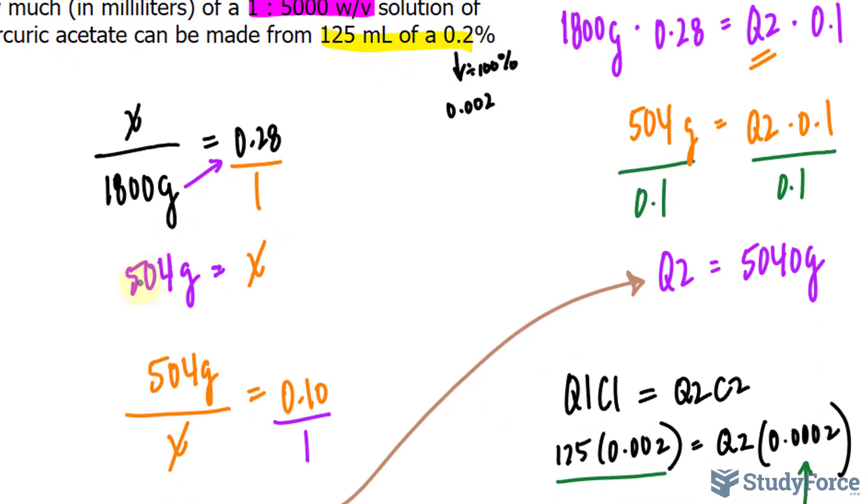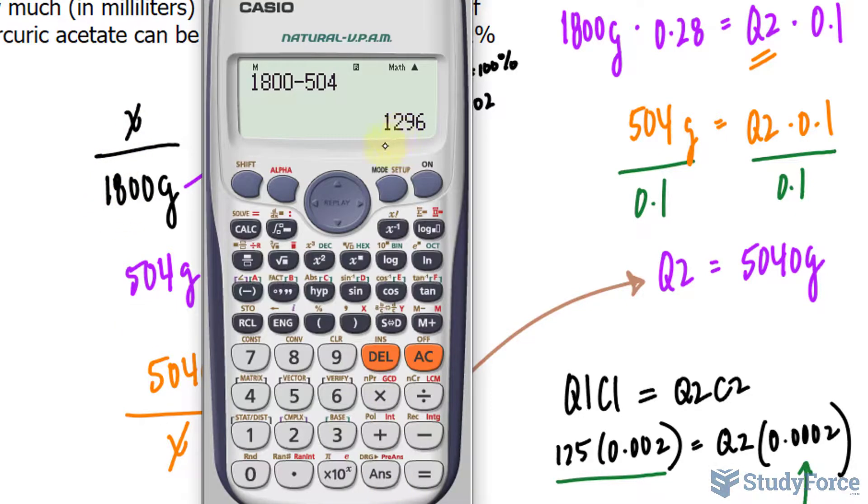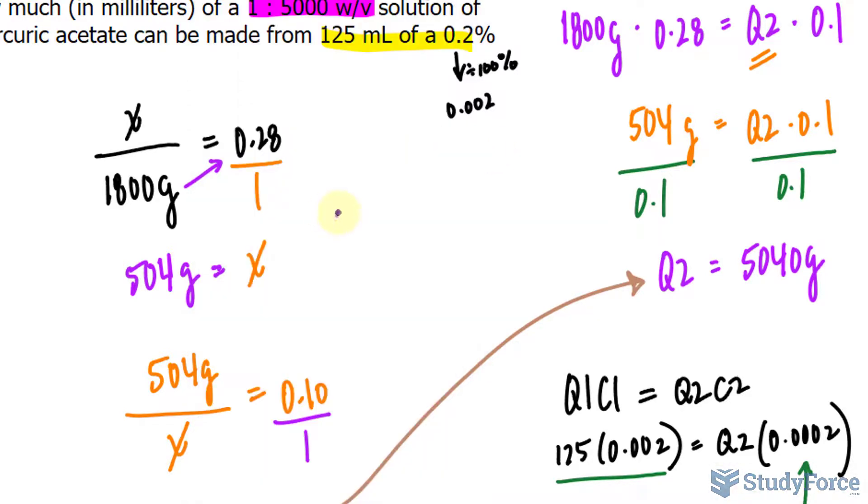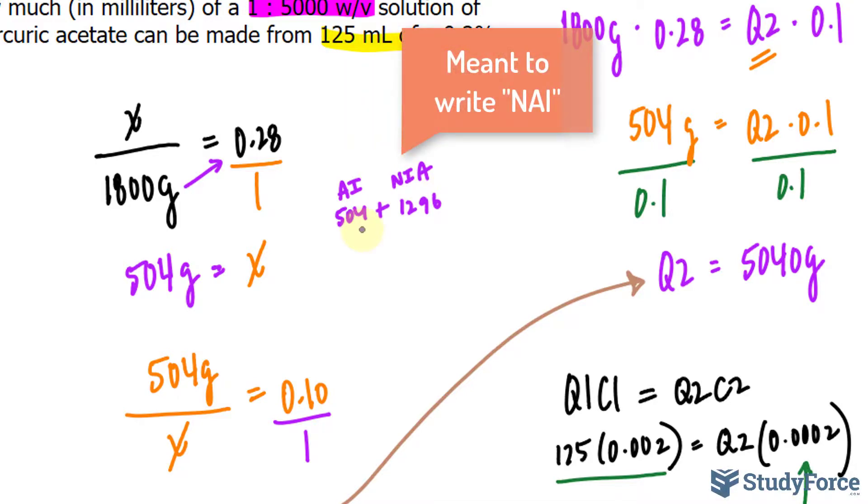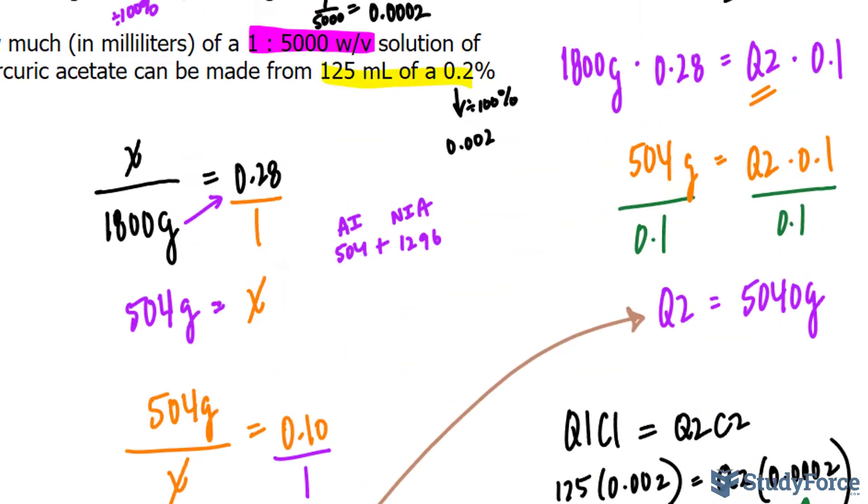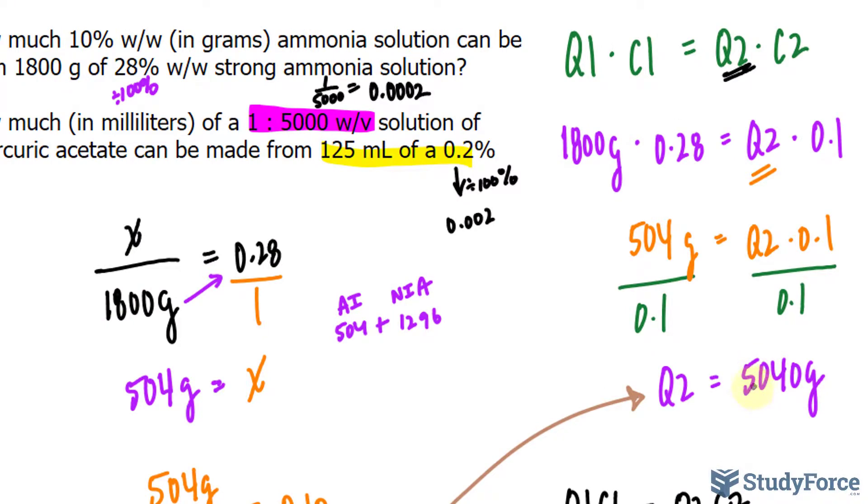After we calculated the active ingredient of 504, that means out of the 1,800 grams, 1,296 was non-active ingredient. So 504 plus 1,296, this is active ingredient, and this is non-active ingredient. I'll call it NIA for short.